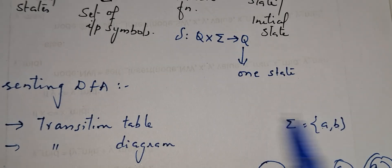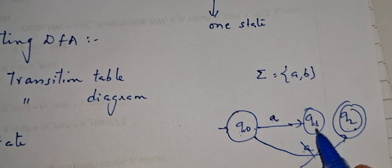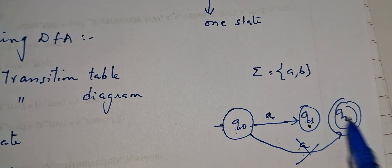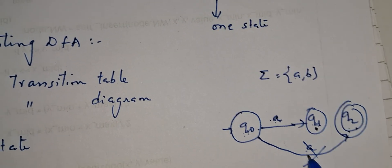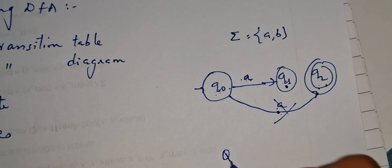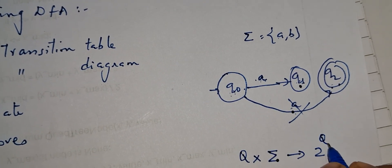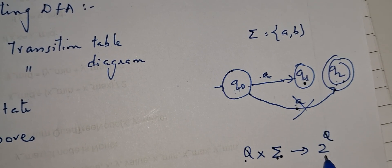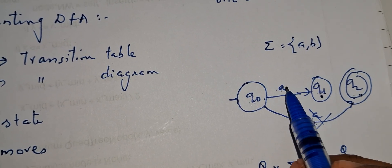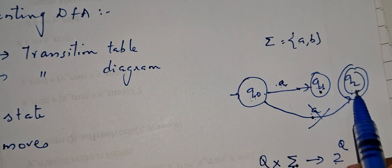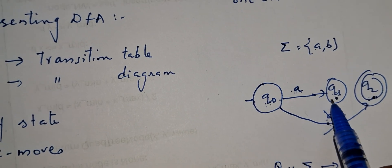As per DFA, the transition function says a state on an input symbol goes to one state only. So Q0 on 'a' goes to Q1 and will not go to any other state on the same input. If a state on the same input symbol goes to more than one state, then it becomes NFA — non-deterministic finite automata — where Q cross sigma gives 2 raised to Q, meaning a state on an input symbol can go to more than one state. So when drawing a DFA, you must confirm that a state on a particular input symbol goes to only one state.